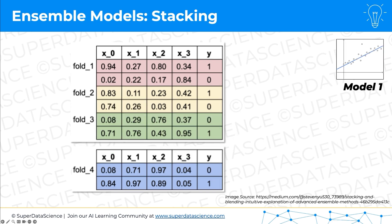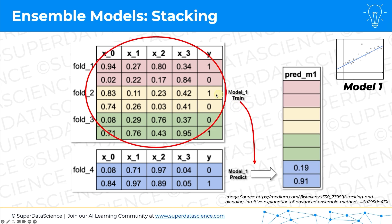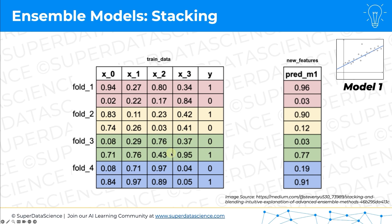Here's how k-fold cross-validation works in this context. We take one fold — say the fourth fold — exclude it, and train model one on the remaining three folds. We then apply that trained model to the excluded fold and get the predictions for those rows. We continue this for every fold: for fold three, for example, we exclude it, train on folds one, two, and four, and apply the model to fold three to get those values. By the end we have a full column of predictions for model one across the entire training set using k-fold cross-validation.